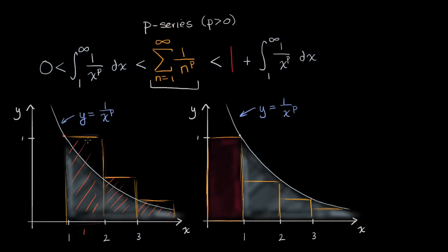Each of these rectangles is covering more than the area under the curve, so the area under the curve is greater than zero, and the p-series is greater than this integral — greater than the area under the curve. But if we add one to the area under the curve, now including both the white and the red area, our p-series is going to be less than that. Because the first term of our p-series equals one, and all the other terms can be viewed as a lower Riemann approximation of the curve — they fit under the curve and leave some area.